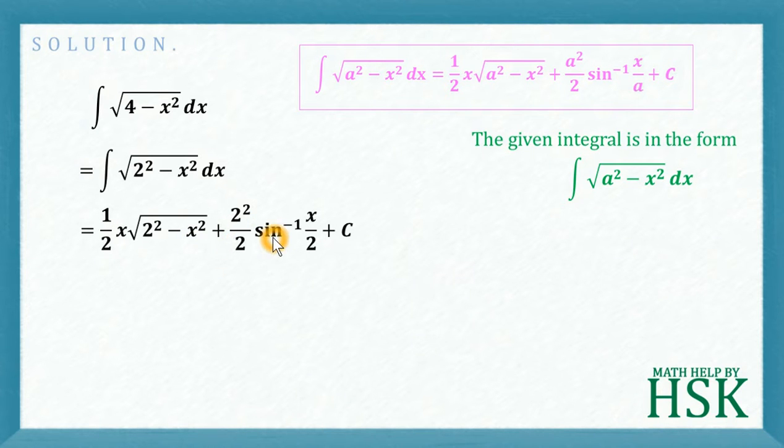Okay, little bit of simplification is required. So I'm going to write 2 squared as equal to 4.